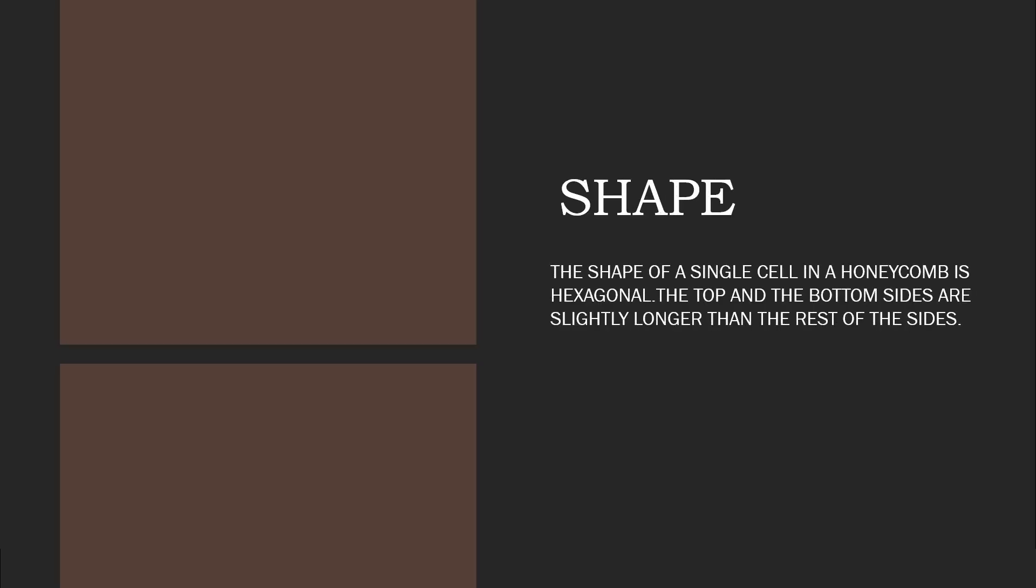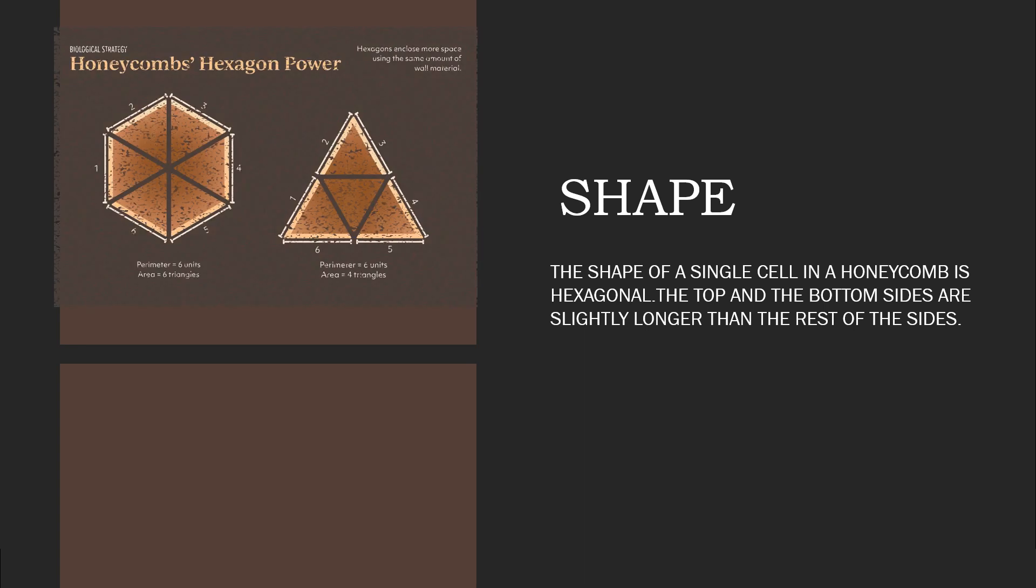The shape of a single cell in the honeycomb is hexagonal. The top and the bottom sides are slightly longer than the rest of the sides.